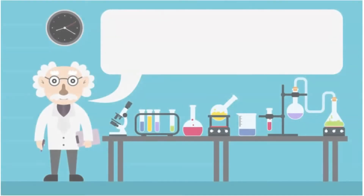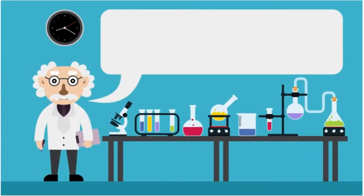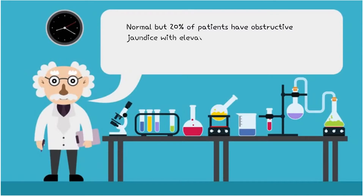Laboratory studies are usually normal, but approximately 20% of patients have obstructive jaundice with elevated liver enzymes in a primarily cholestatic pattern, with disproportionate elevation of the alkaline phosphatase, gamma-glutamyl transferase, and bilirubin.